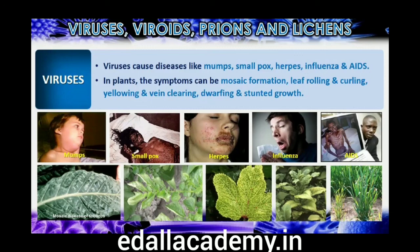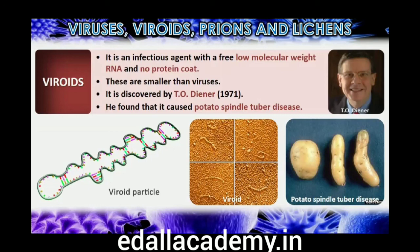Viroids. In 1971, Diener discovered a new infectious agent that was smaller than viruses and caused potato spindle tuber disease. It was found to be free RNA — it lacked the protein coat that is found in viruses, hence the name viroid. The RNA of the viroid was of low molecular weight.